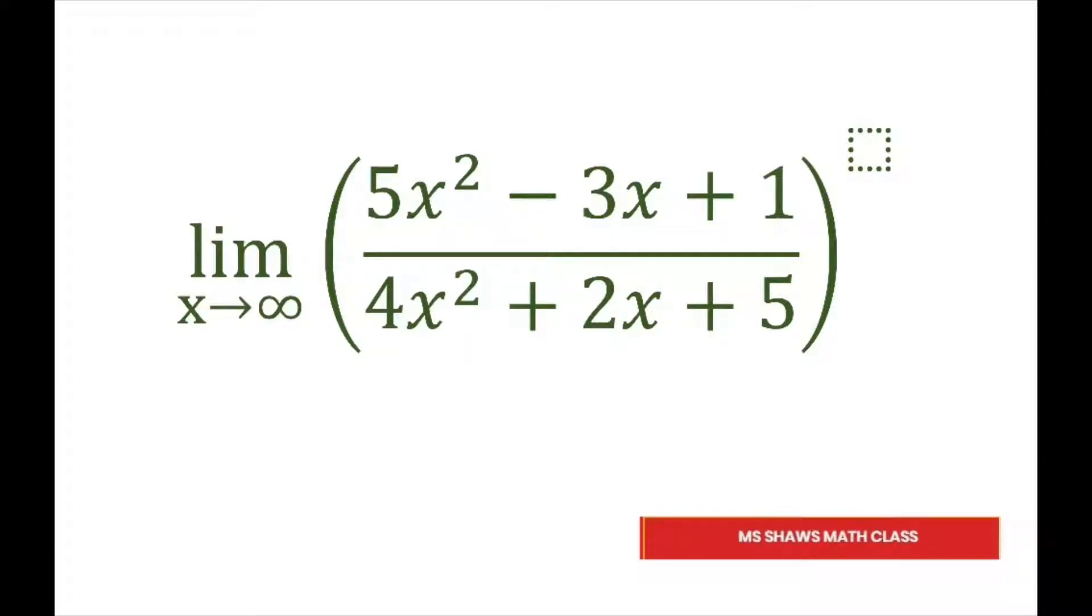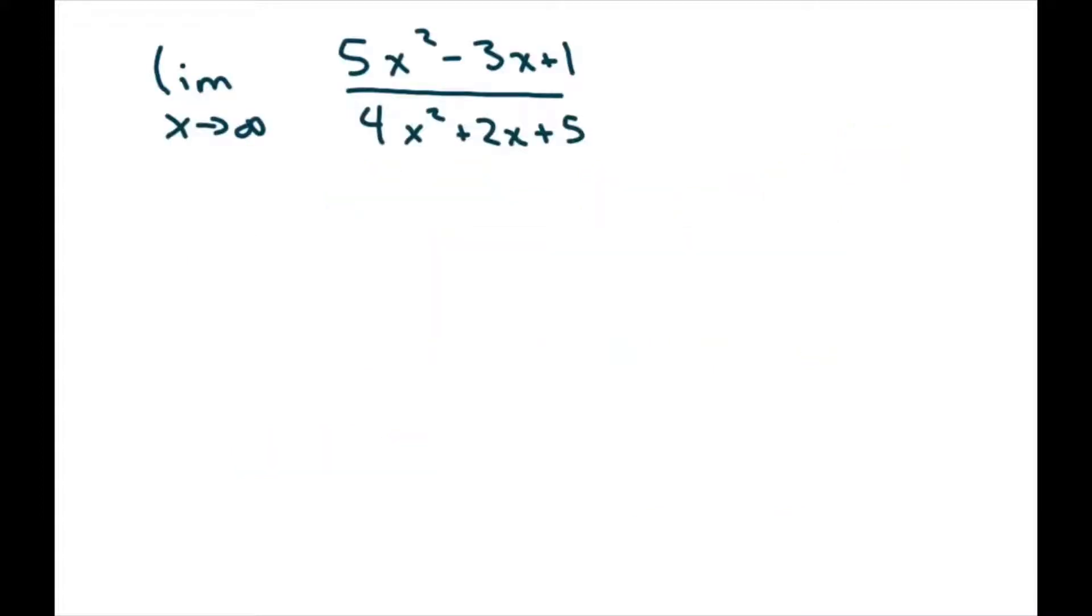Any time you have a polynomial fraction and you're taking a limit with x going to infinity, what we're going to do is divide the numerator and the denominator separately by the highest power of x in the fraction, which would be the squares.